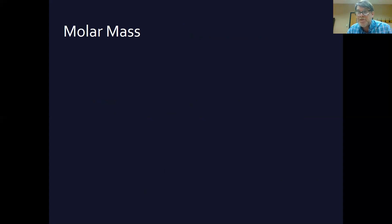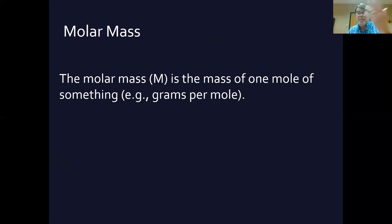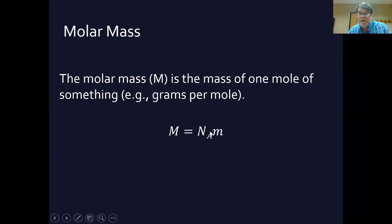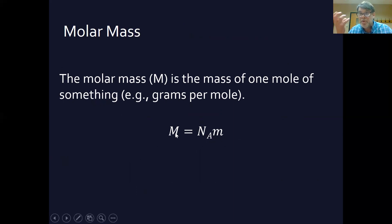Molar mass is the number of grams in a mole of something — that's the molar mass, capital M. The molar mass of something is the mass of one mole of that something, typically in grams per mole. The molar mass equals Avogadro's number times the mass of an individual atom or molecule. So for carbon, that gives you 12 grams per mole — surprise! The molar mass roughly corresponds to the number of particles in the nucleus of an atom, or in all the atoms of a molecule.